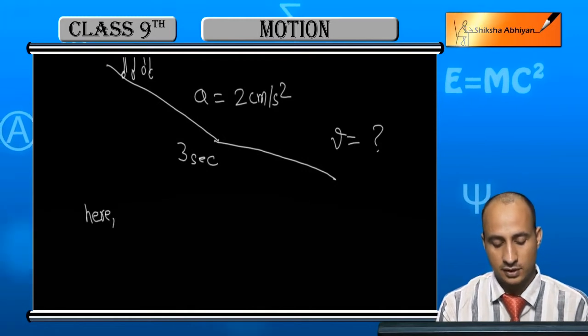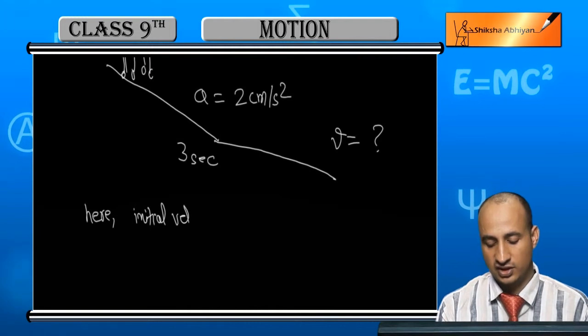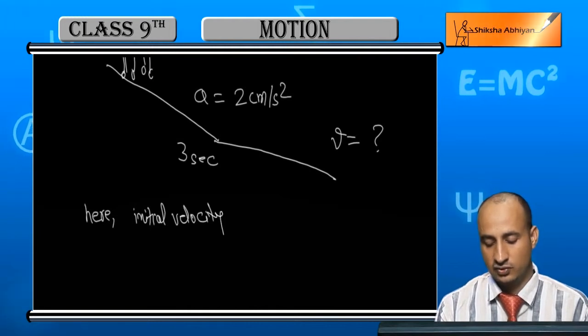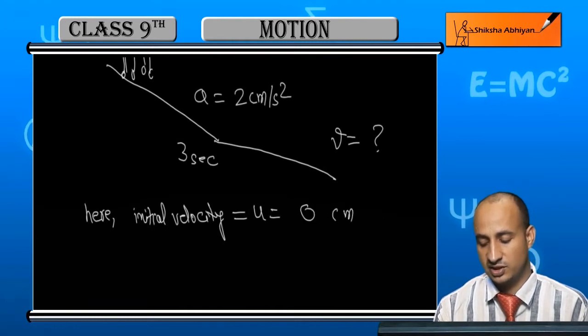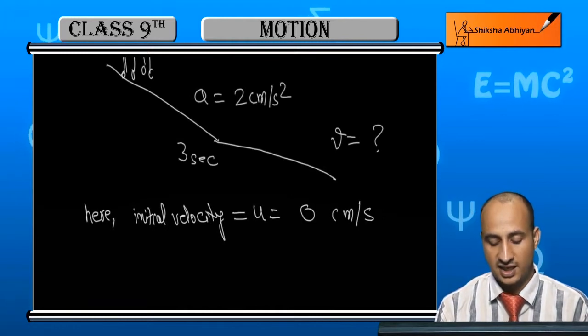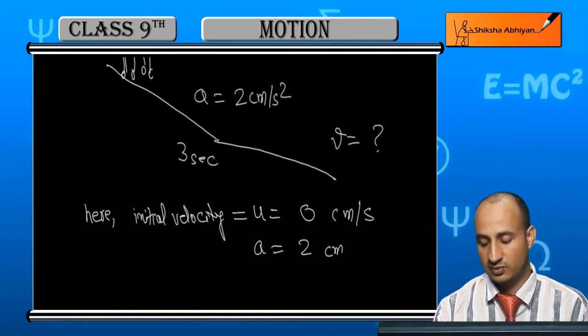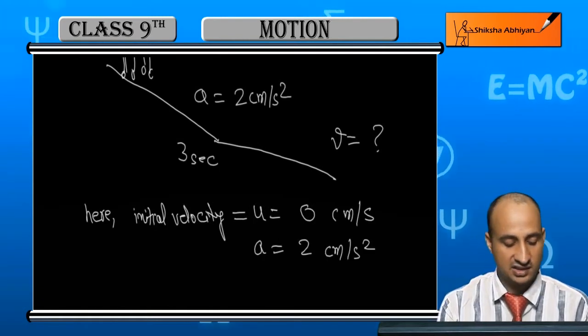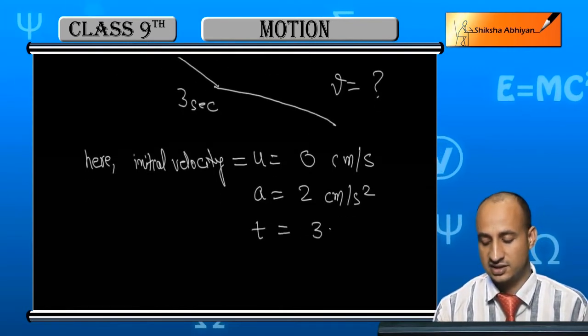Here, initial velocity is equal to U, which is equal to 0 cm per second. Acceleration is equal to 2 cm per second square. Acceleration is equal to 2 cm per second square given. And here, the time is equal to 3 seconds.